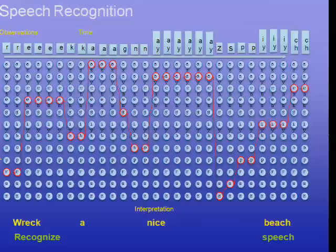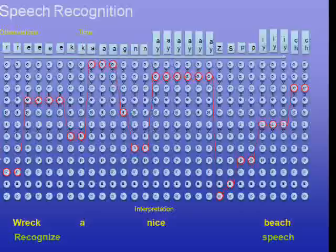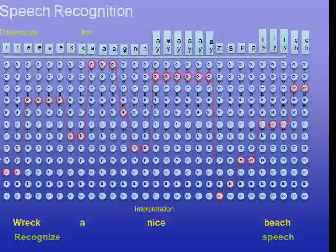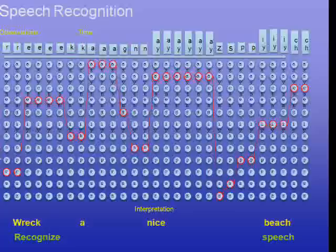We can also use dynamic programming to do speech recognition. We have a class of observations, and we explore the probability that a hypothesis is actually recognized speech. That computation can also be done with dynamic programming. Those were our three classes of computational patterns — just three of the 13.